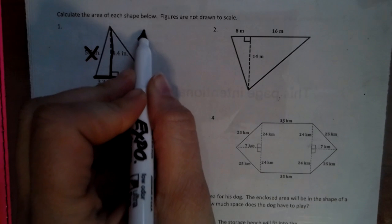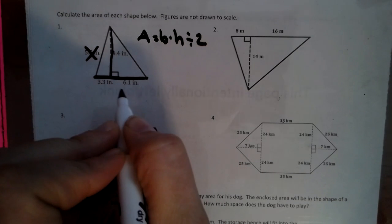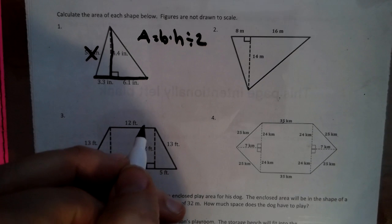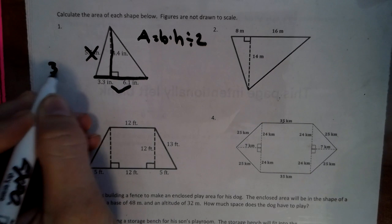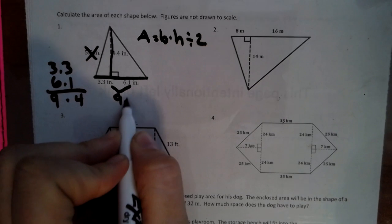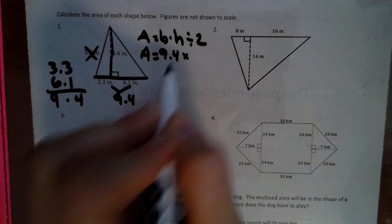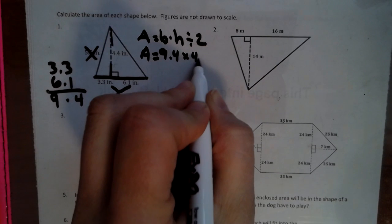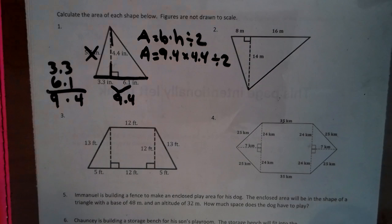So we have area equals base times height divided by two. Why did I use that formula? Because these aren't really numbers that I want to deal with cutting them in half. But I have to add these two together right now so we can easily look at that on the side as we just add straight down. So we have 9.4 as our base.